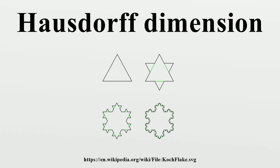For shapes that are smooth, or shapes with a small number of corners — the shapes of traditional geometry and science — the Hausdorff dimension is an integer agreeing with the topological dimension. But Benoit Mandelbrot observed that fractals, sets with non-integer Hausdorff dimensions, are found everywhere in nature.